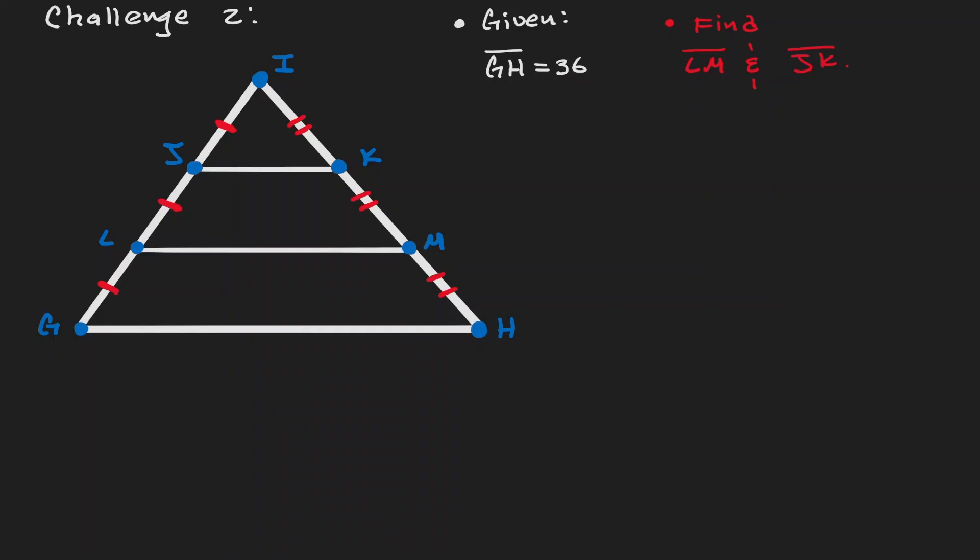Now we want to find out the value for the length of LM and JK. And the only known is the base of this triangle, where this base has a value of 36. Let's approach the situation as we did before. Let's consider the triangle ILM. And if we do, then notice that JK is the median of that triangle.